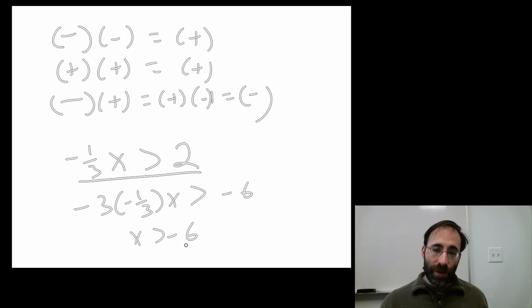So what you must do is whenever you multiply by a negative number on both sides of the inequality, you must flip the inequality. So instead of being greater than, this should be less than, and this should be less than. Pick a number less than negative 6. Say negative 9. So if you do this over here, negative 9 times negative 1 third is 3, and 3 is bigger than 2. So now we're okay.